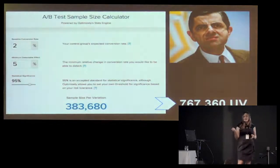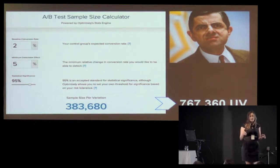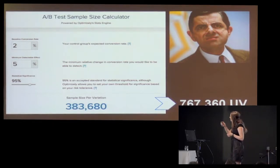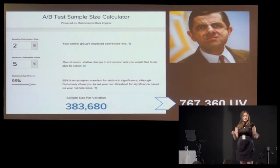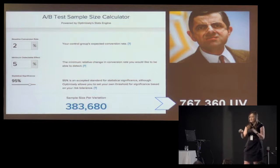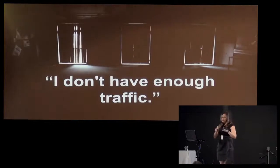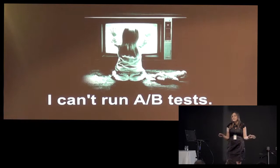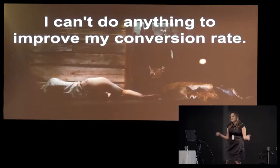Let's look at a sample. This is the Optimizely Sample Size Calculator. Imagine you have a conversion rate of 2% and you're looking to run a test that will bring you an uplift of 5%. That number there is the unique visitors you need per variation, which means on that specific page you need more than 700,000 unique visitors. That is probably unreachable for most of you. So you might end up thinking that you don't have enough traffic, you cannot run one single A/B test a month, and you cannot do anything to improve your conversion rate.